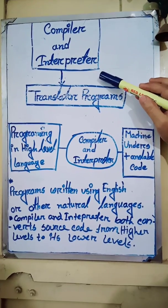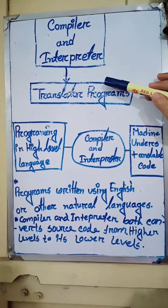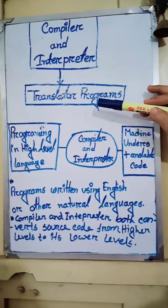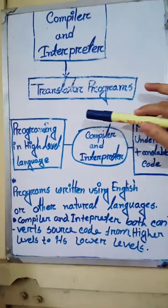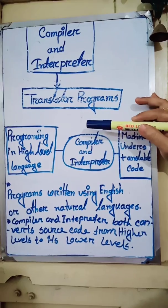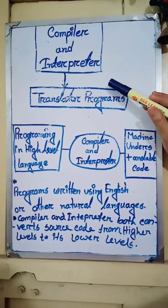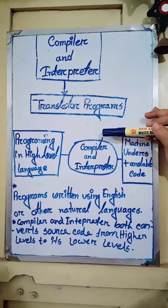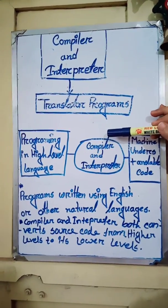They translate computer source code written in one programming language to another programming language. Compiler and interpreter are primarily used to convert source code written in high-level language to its corresponding machine understandable code.